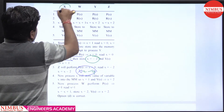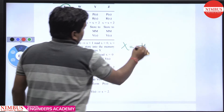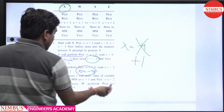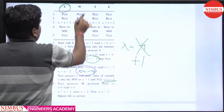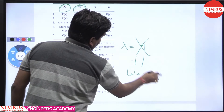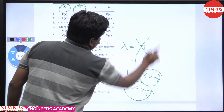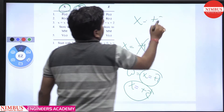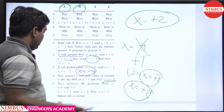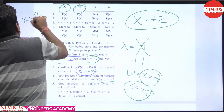Now process x continues, so it updates the minus 4 value to plus 1. s becomes 2 and x becomes plus 1. After that, process w reads x equal to plus 1 and increments by 1. So the maximum value of x equals plus 2. The answer is D — x equals plus 2.